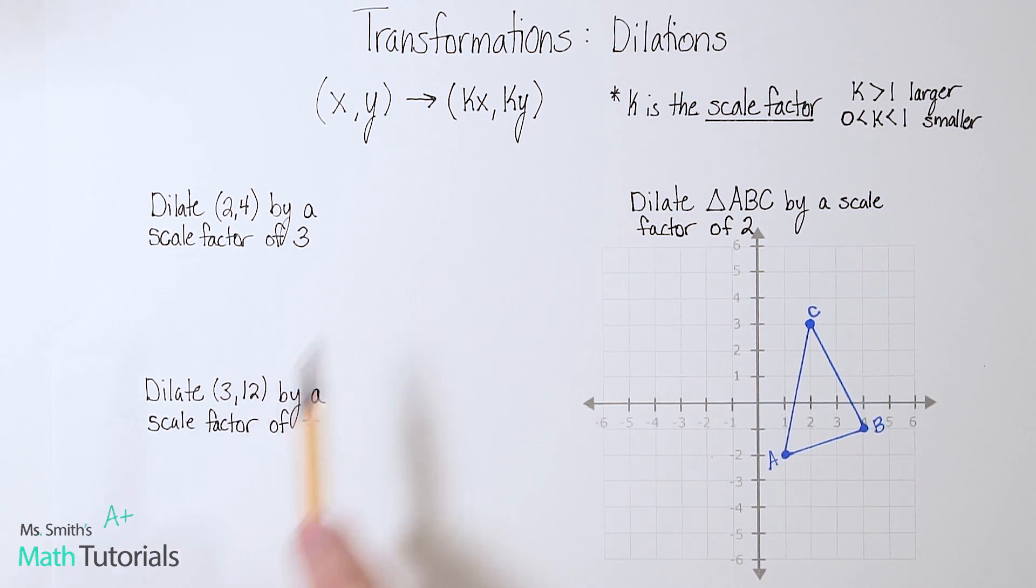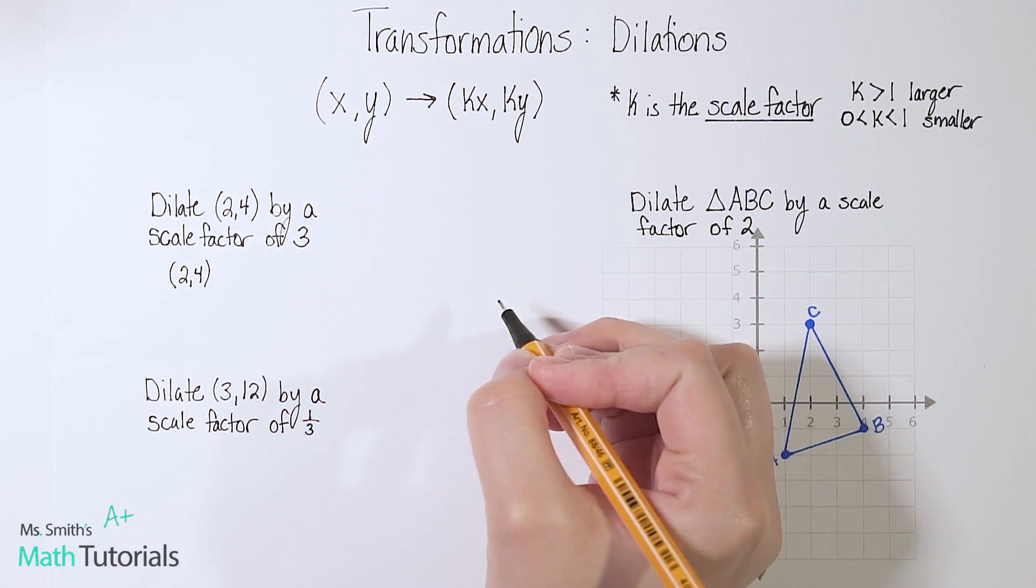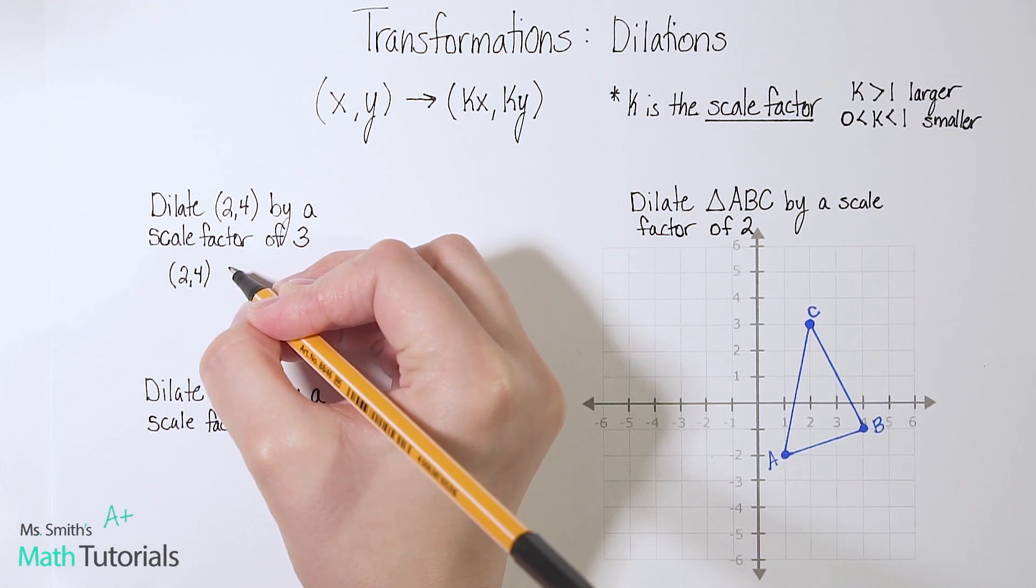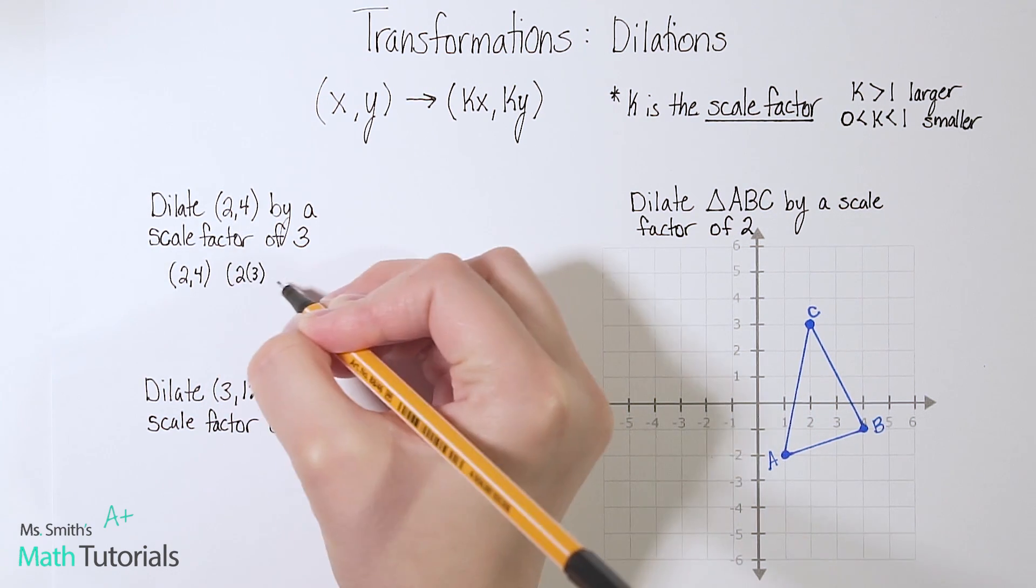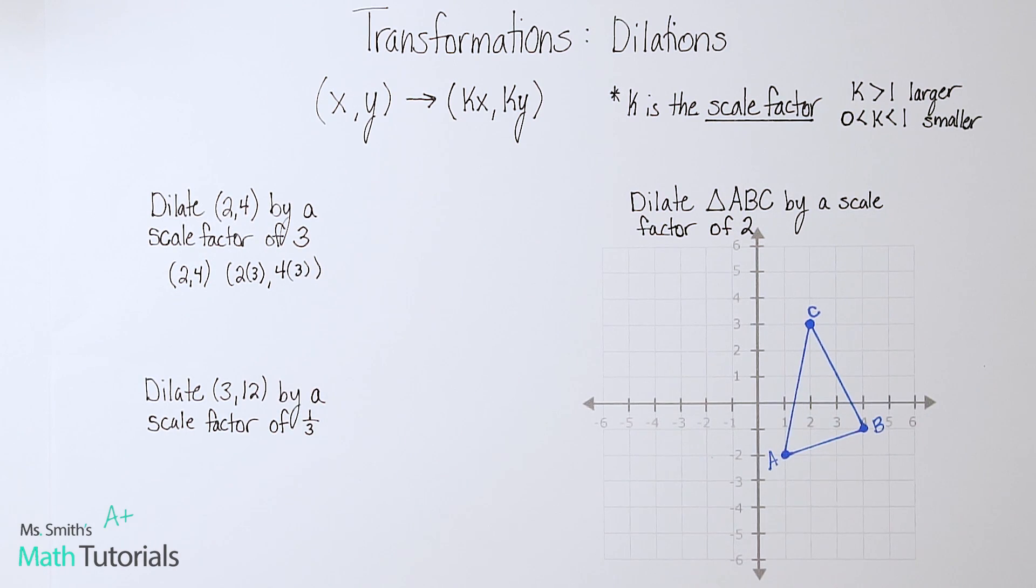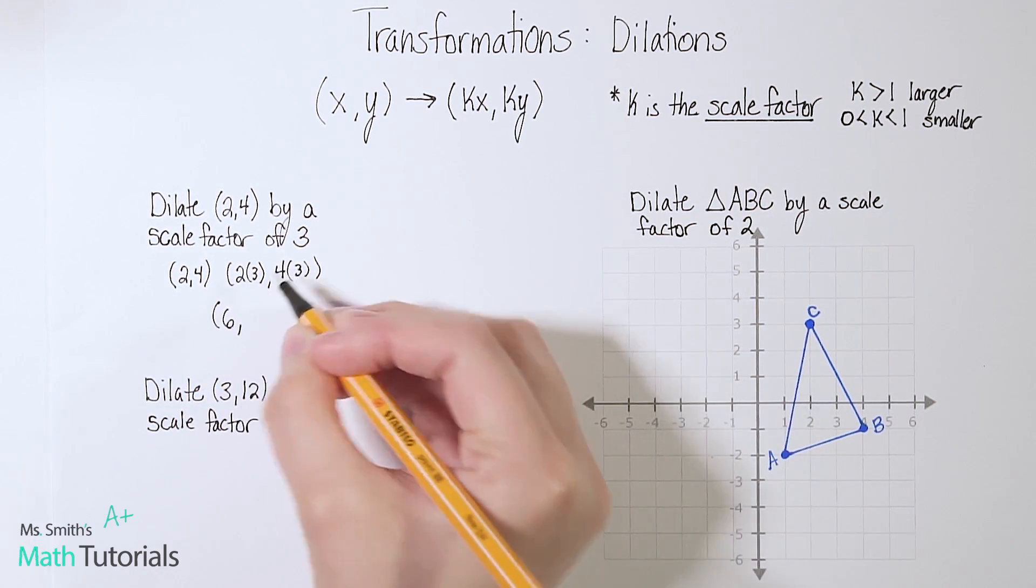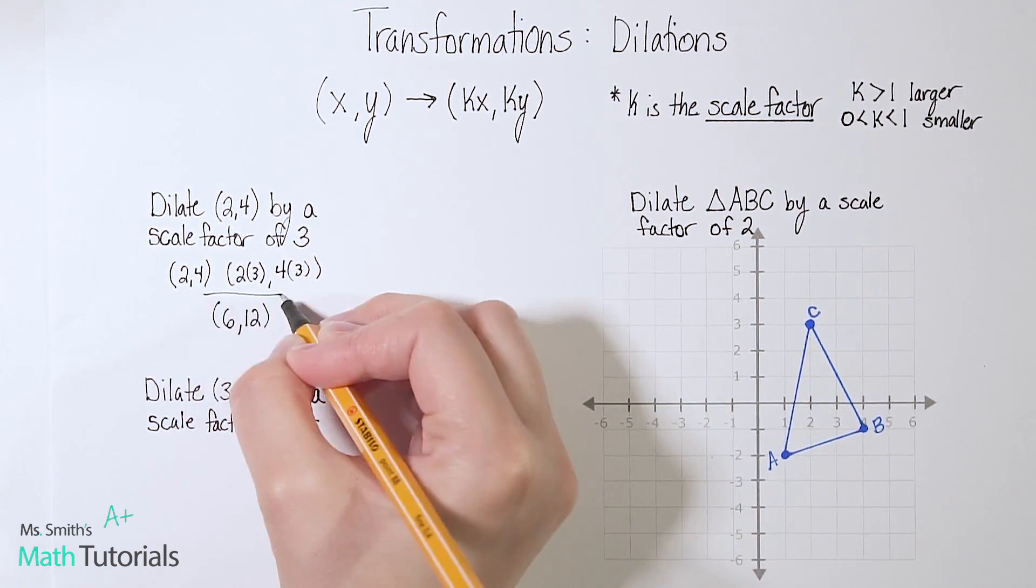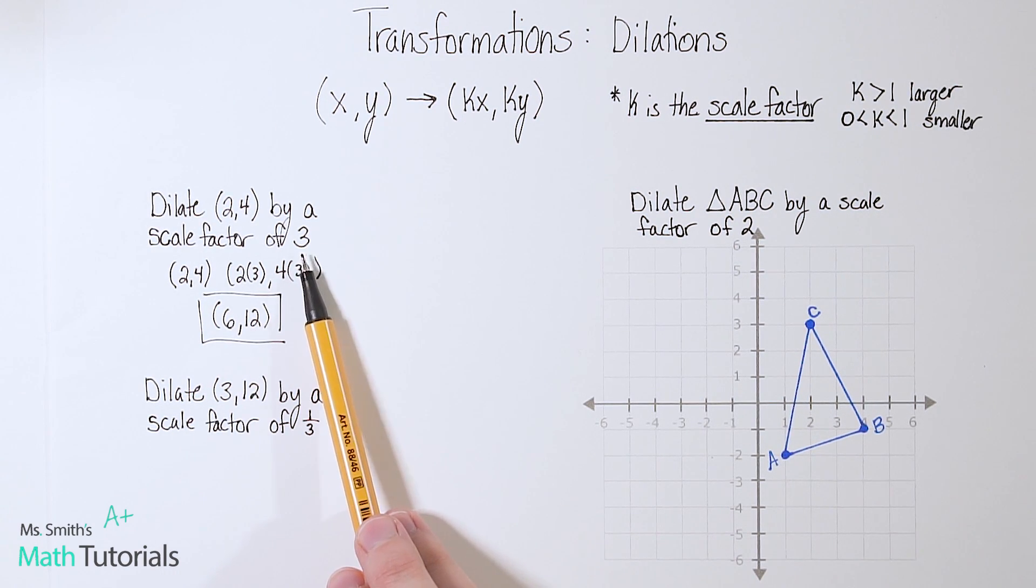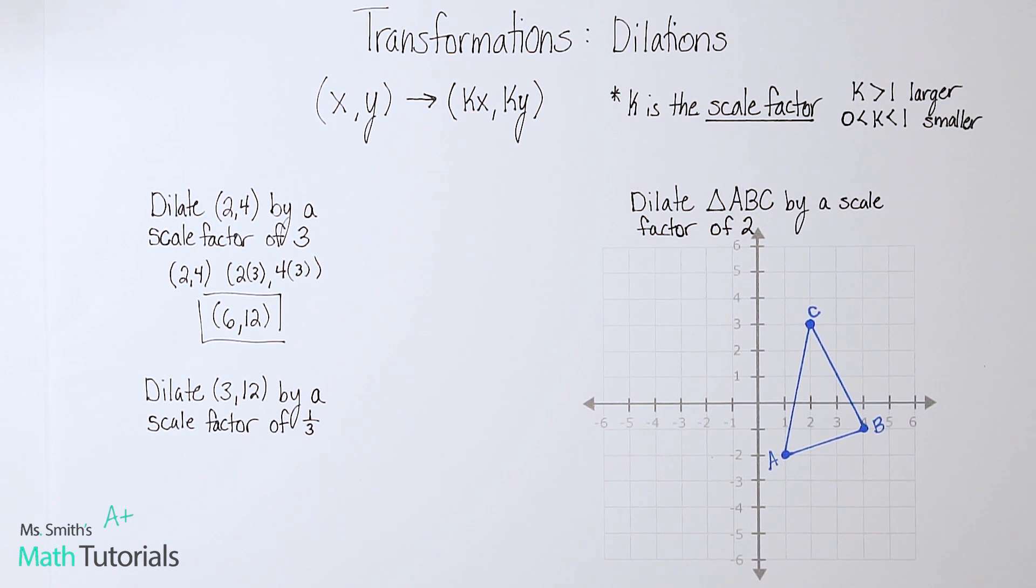So if 3 is my k in this instance, I'm going to take the point (2,4) and I'm going to multiply each of these by 3. So that'll be 2 times 3, 4 times 3. All right, and let's write our final answer. So 2 times 3 we know is 6, and 4 times 3 is 12. So notice that our numbers did get larger because our scale factor was greater than 1. 3 is greater than 1, so we went larger.